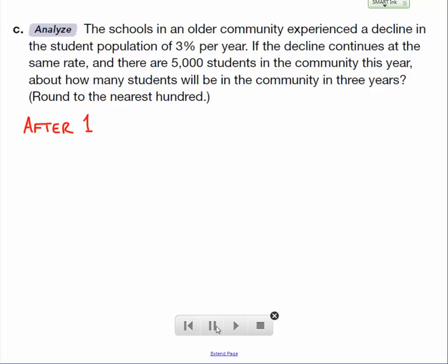After one year, we would take the 5,000 students that are currently enrolled and multiply that by 0.97. Why 0.97? Because it's a 3% decrease, meaning we're going to still have 97% of the students that were there the year before. If there were 5,000 students, after one year, we're only going to have 97% of those students left because we lost 3%. That's 4,850 students.